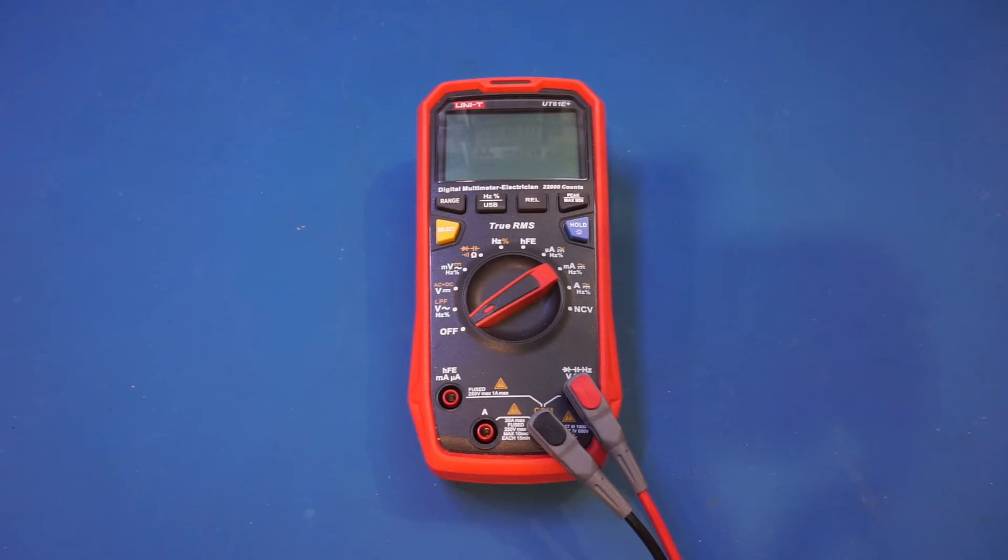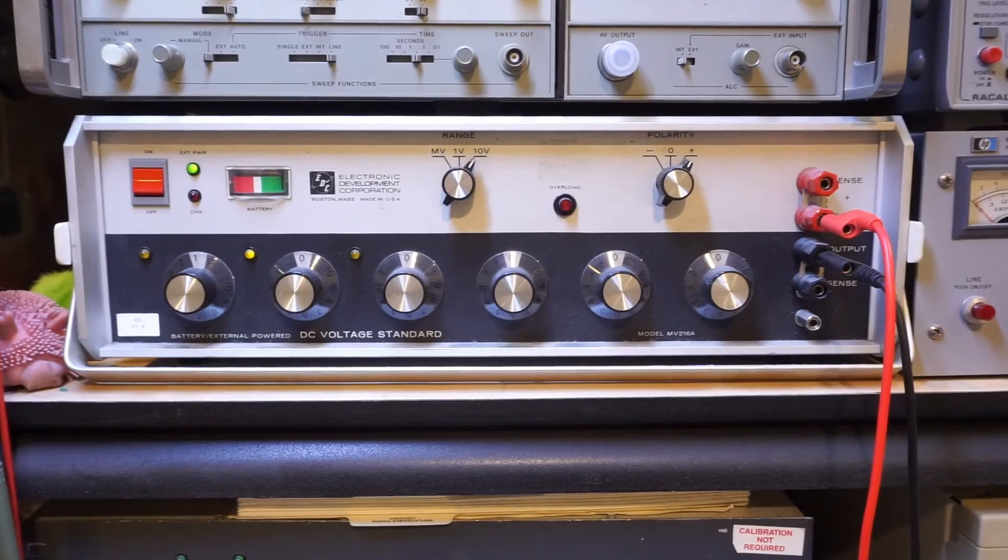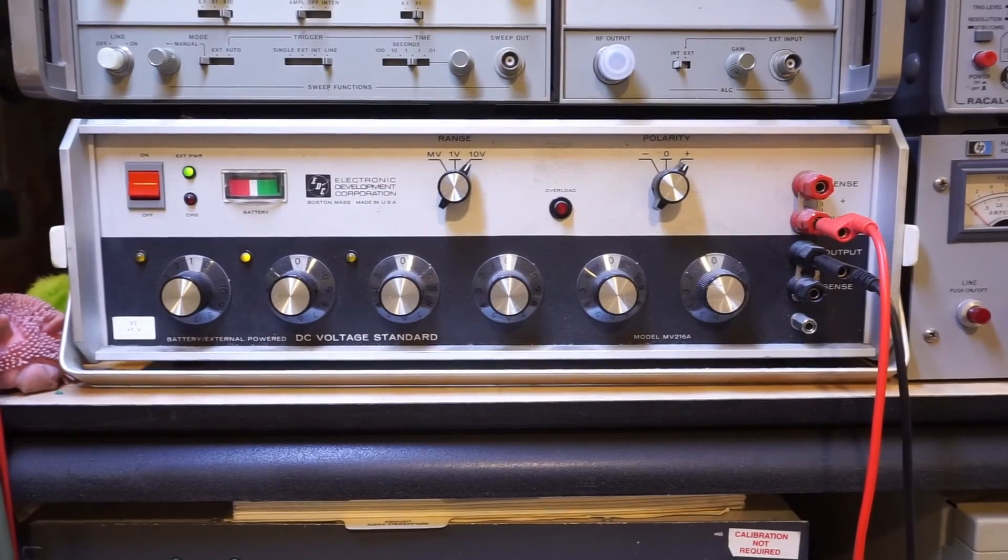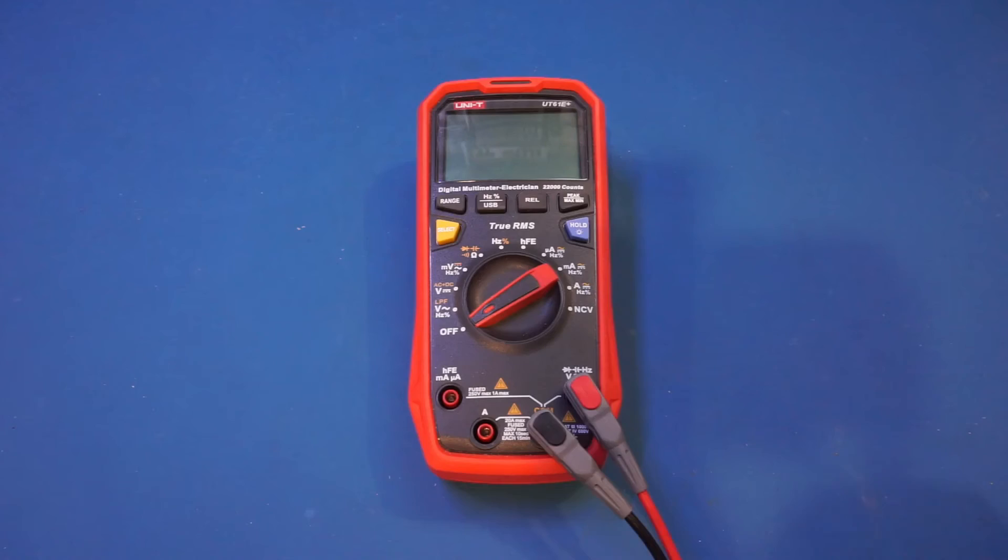Now let's talk about the measurement accuracy. Needless to say, measurement accuracy and repeatability are probably the most important things when you choose a multimeter, and the UT61E Plus definitely shines in these areas. I have periodically checked the measurement accuracy against my EDC NV216A voltage standard over the last year, and the measurement accuracy has not drifted much at all. You can definitely trust the readings with this meter with confidence.